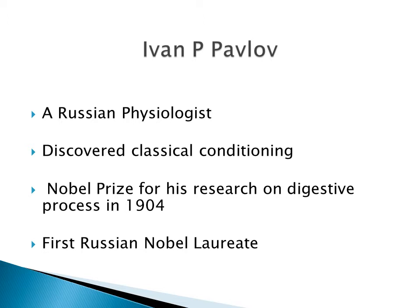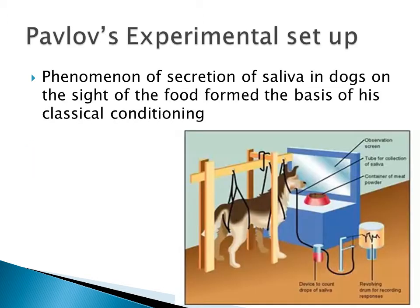He was basically studying the process of gastric secretions in dogs. Here we can see Pavlov's experimental set-up. Pavlov specially designed an apparatus for measuring how much a dog's mouth salivates in response to food. A cup was attached to the dog's cheek which collected drops of saliva flowing from the animal's salivary gland.